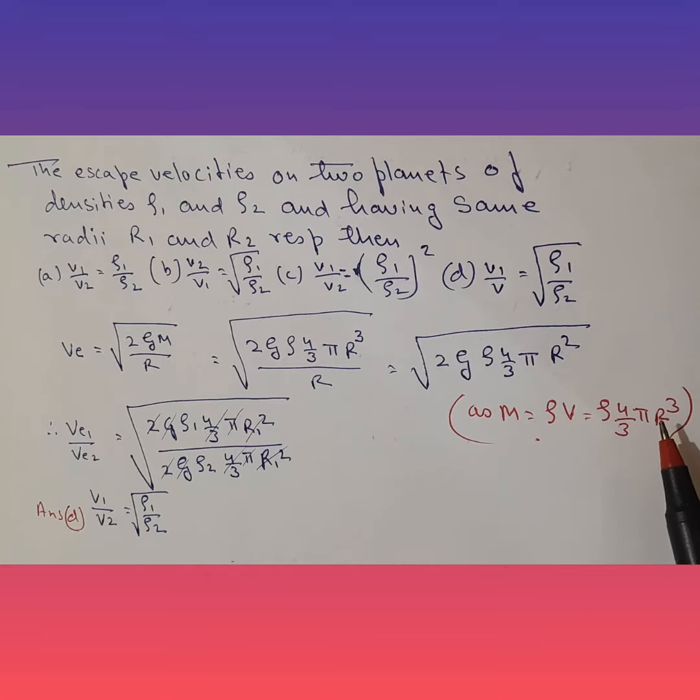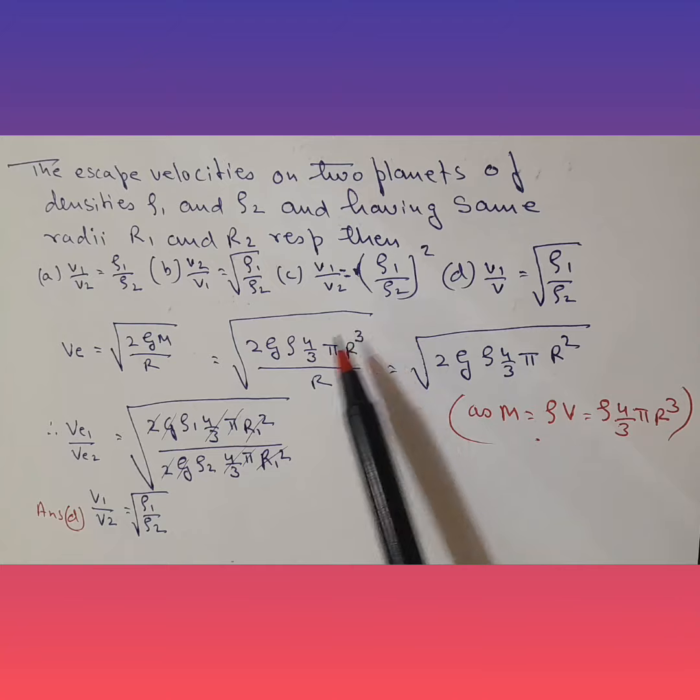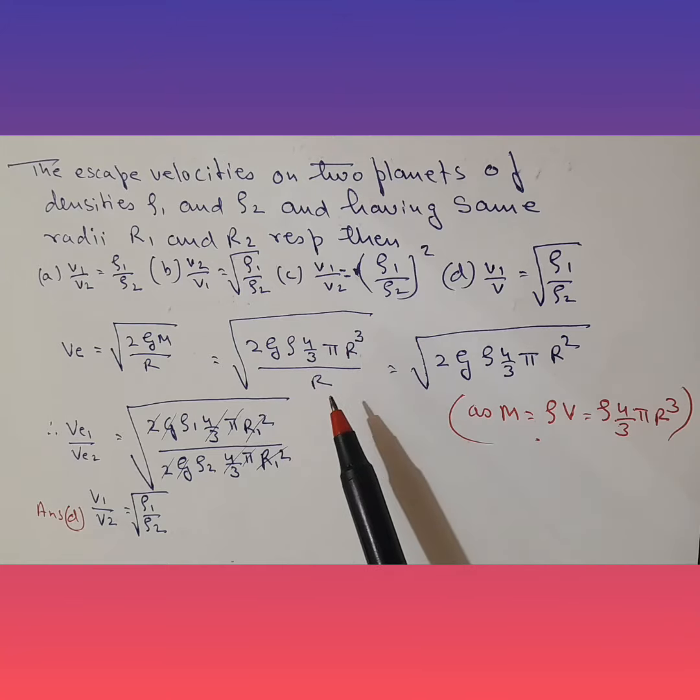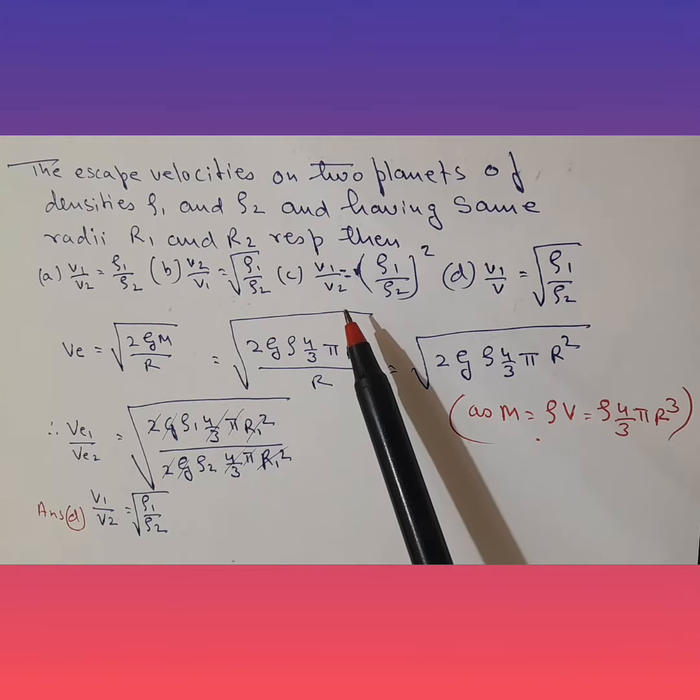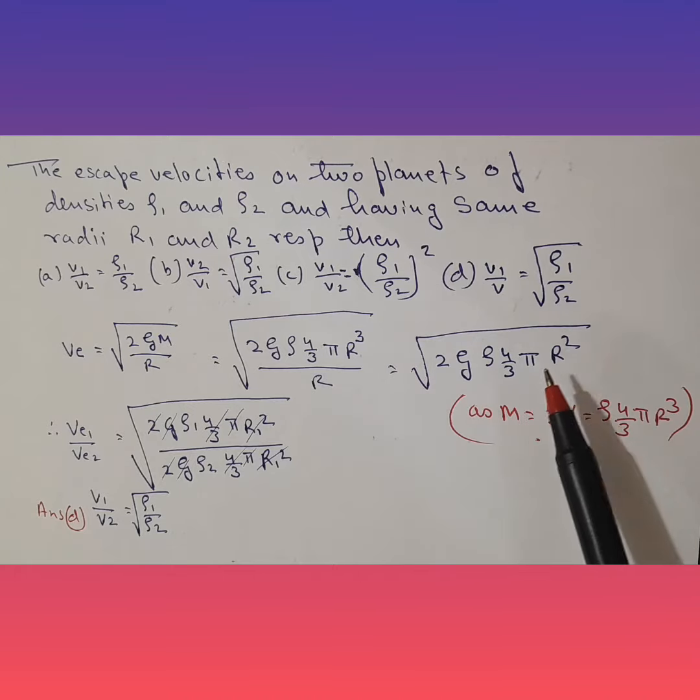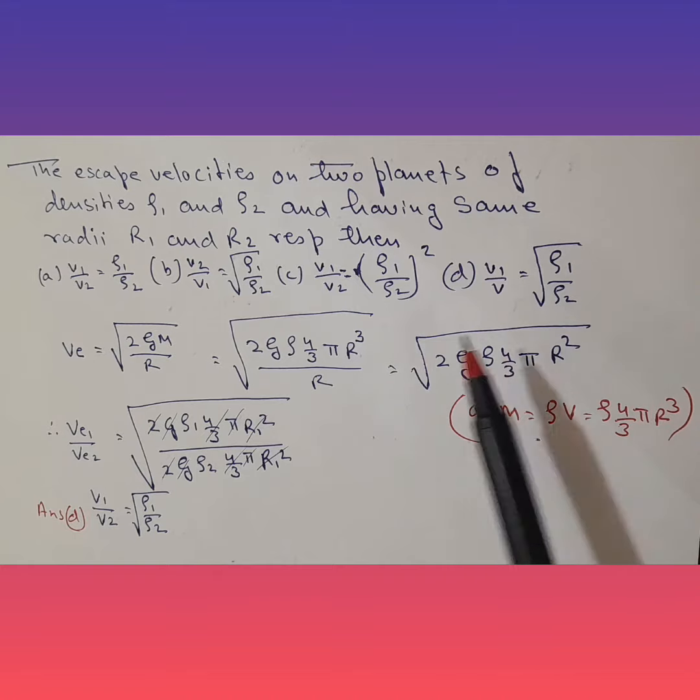So that's what we do—we substitute. So √(2Gρ × 4/3πr³/r), this r, the entire thing is in root. Now this gets cancelled, so in root we have 2Gρ × 4/3πr². I am deliberately not taking this r² out because you would know later.